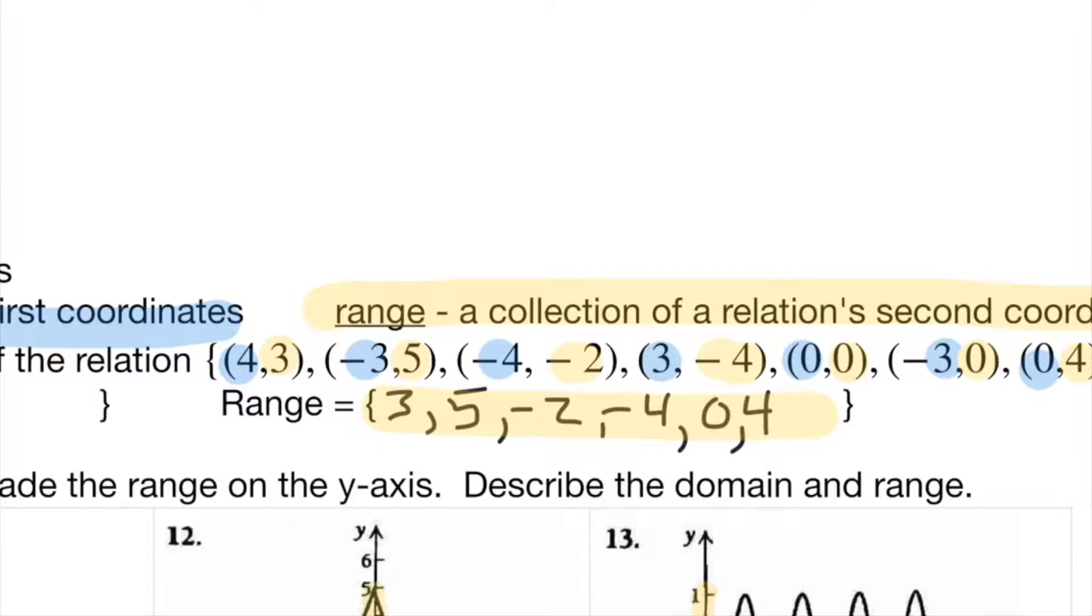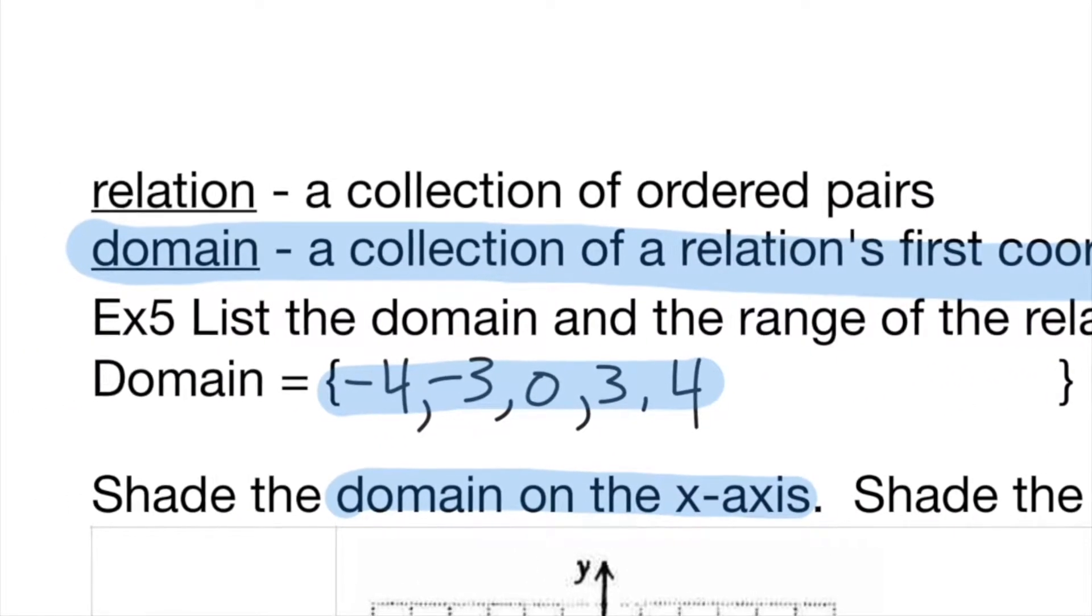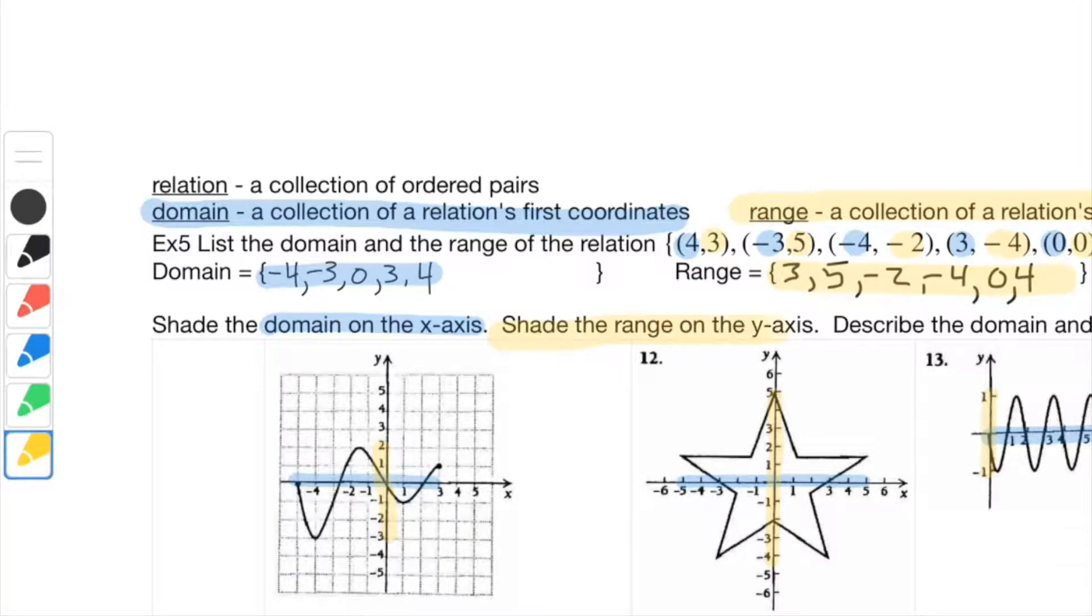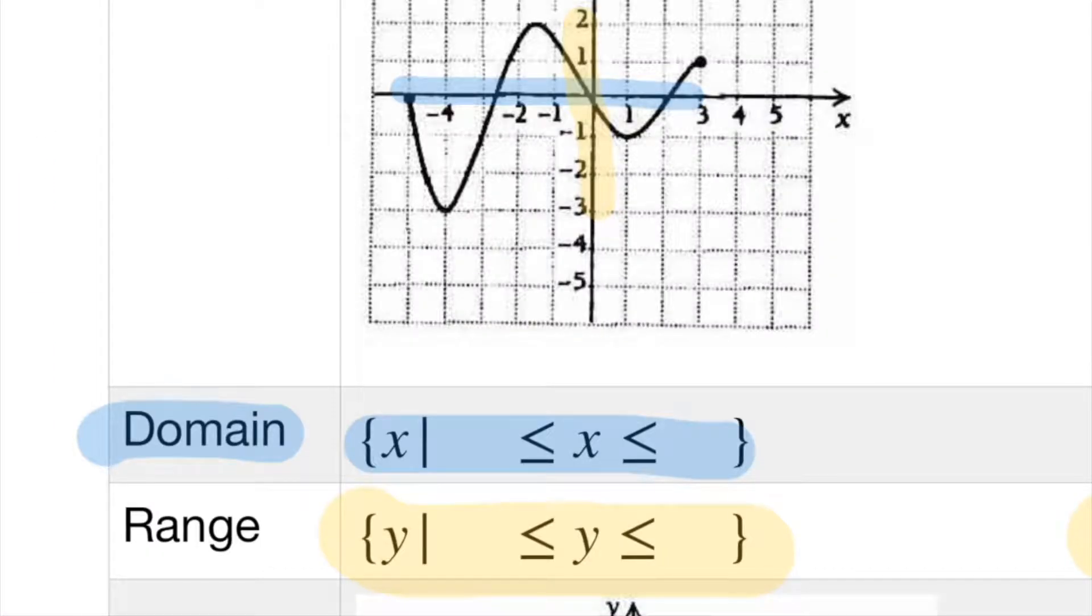I've collected all the y values here in the range, and all the x values here in the domain. The instructions say shade the domain on the x axis and shade the range on the y axis. We can write that the domain is all x such that they satisfy this condition, negative 5 is less than or equal to x is less than or equal to 3. And you can see the domain right here from negative 5 all the way up to positive 3. The range is going to be all the y values that satisfy this other condition, the fact that they go between negative 3 and positive 2. You can see that here. They go from negative 3 all the way up to positive 2.